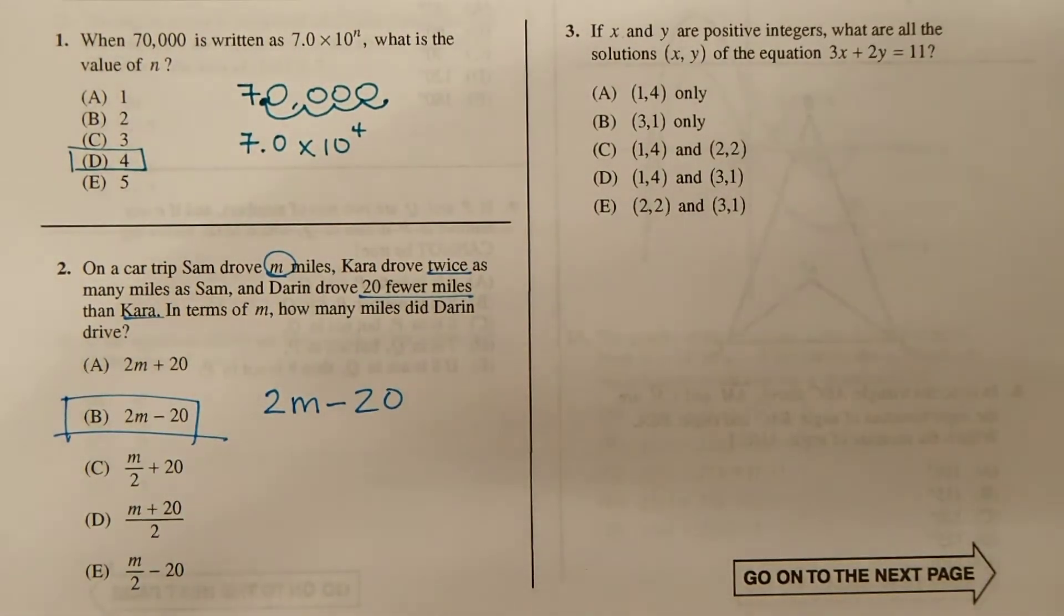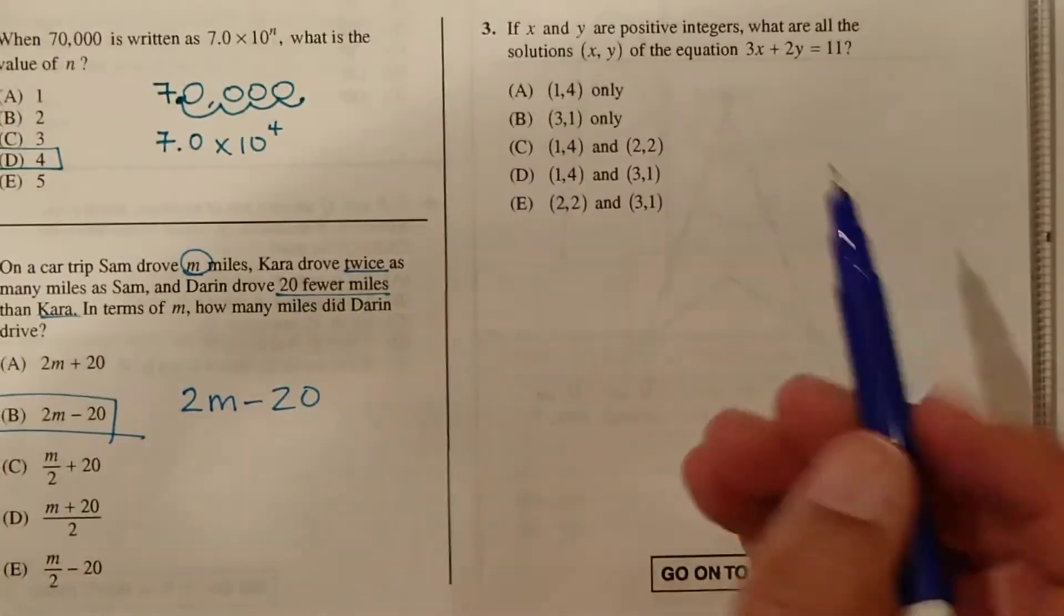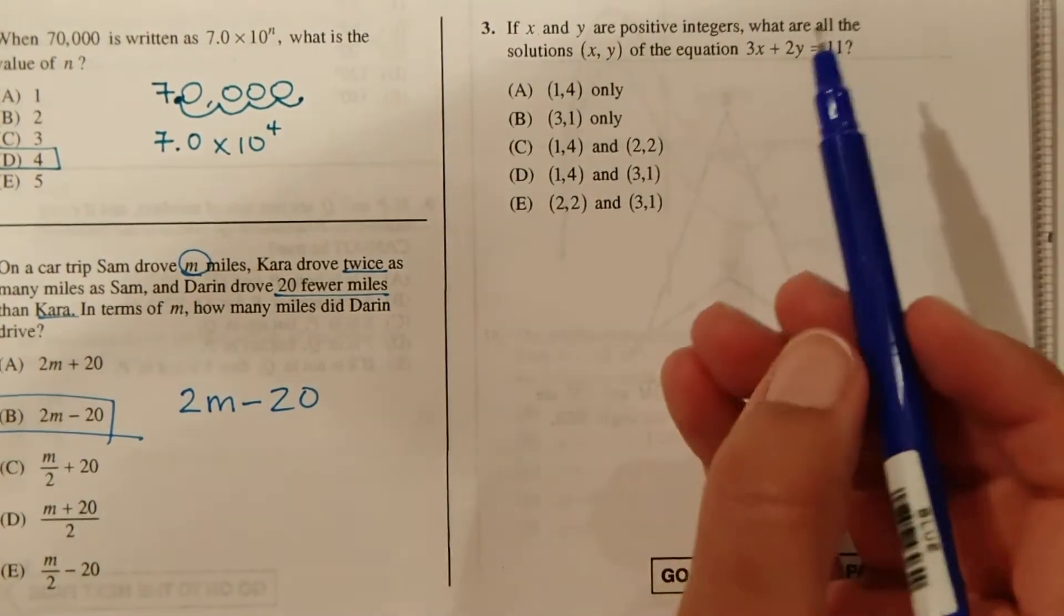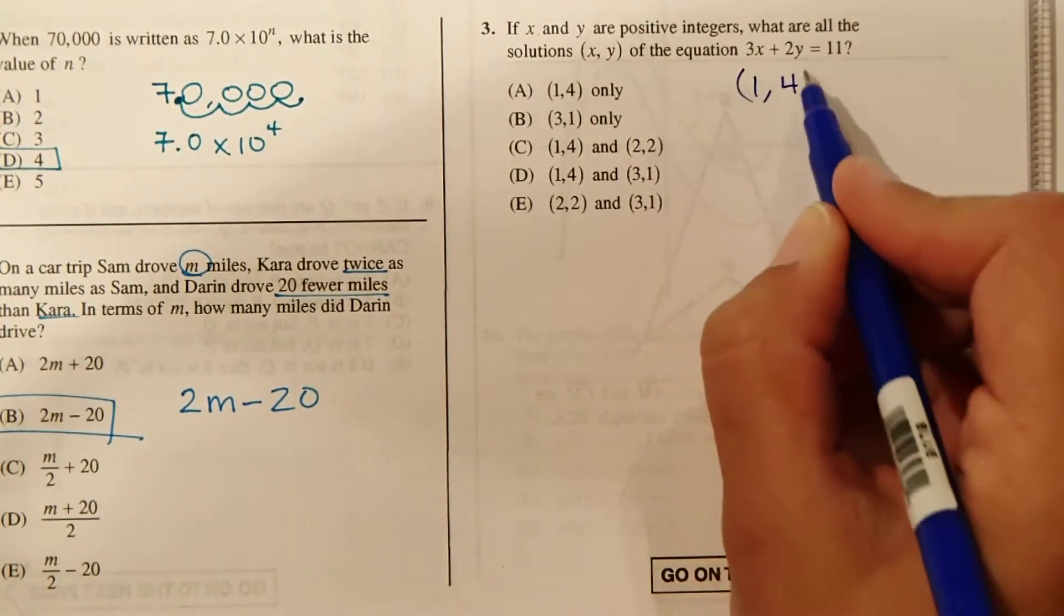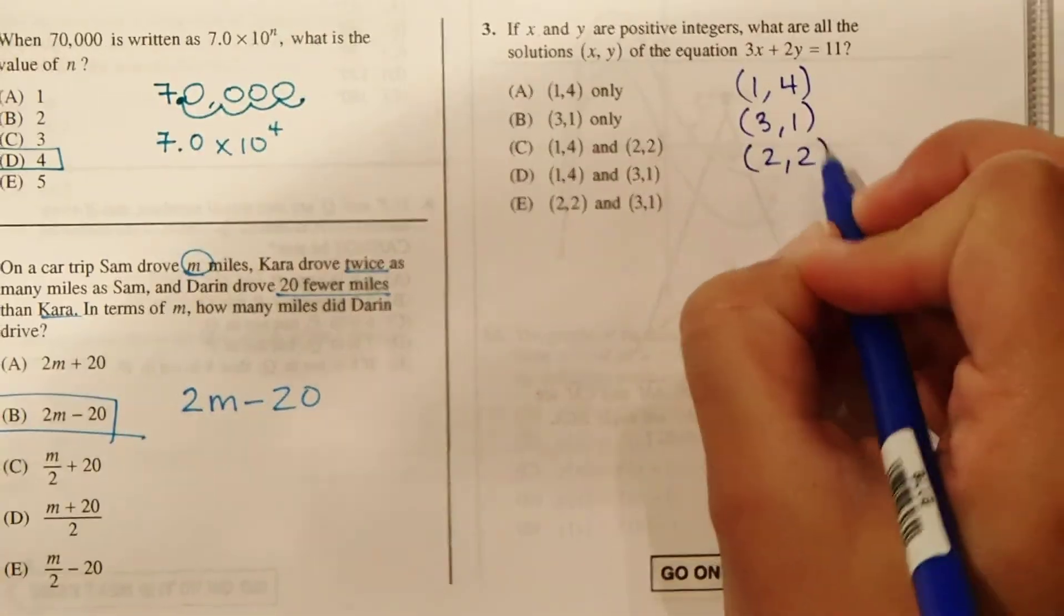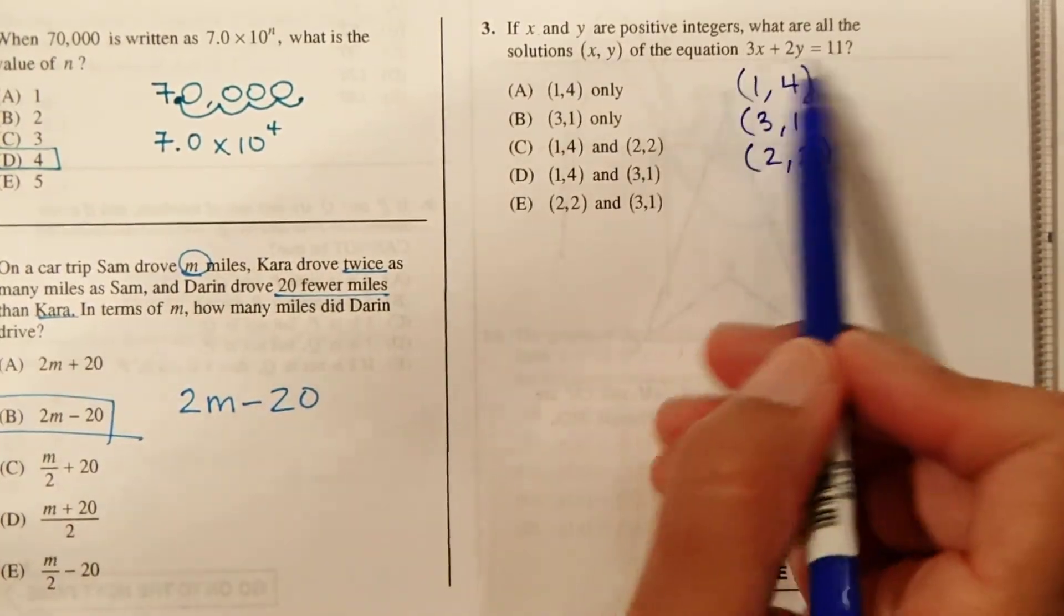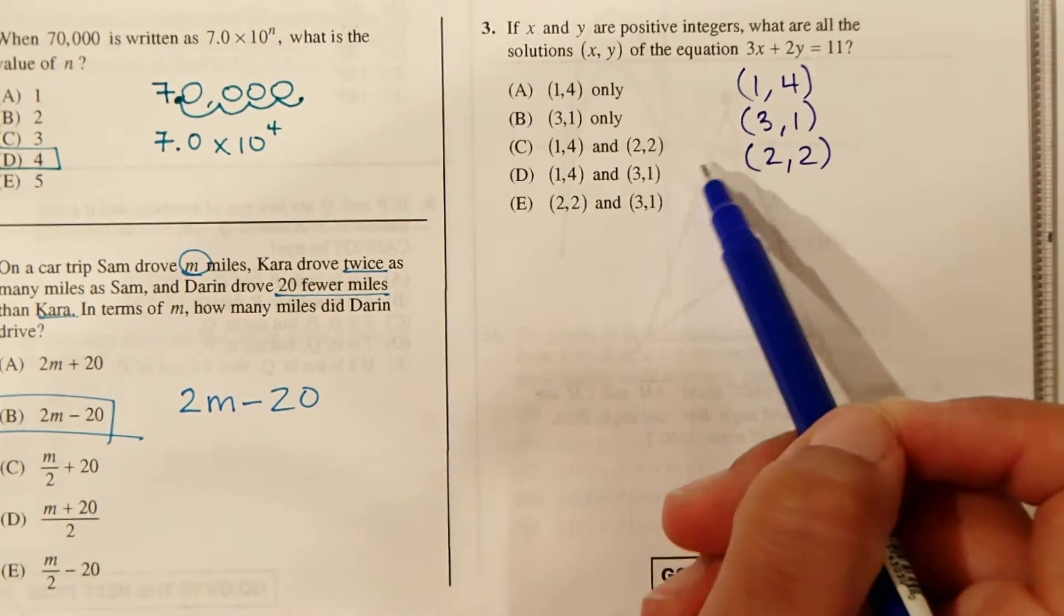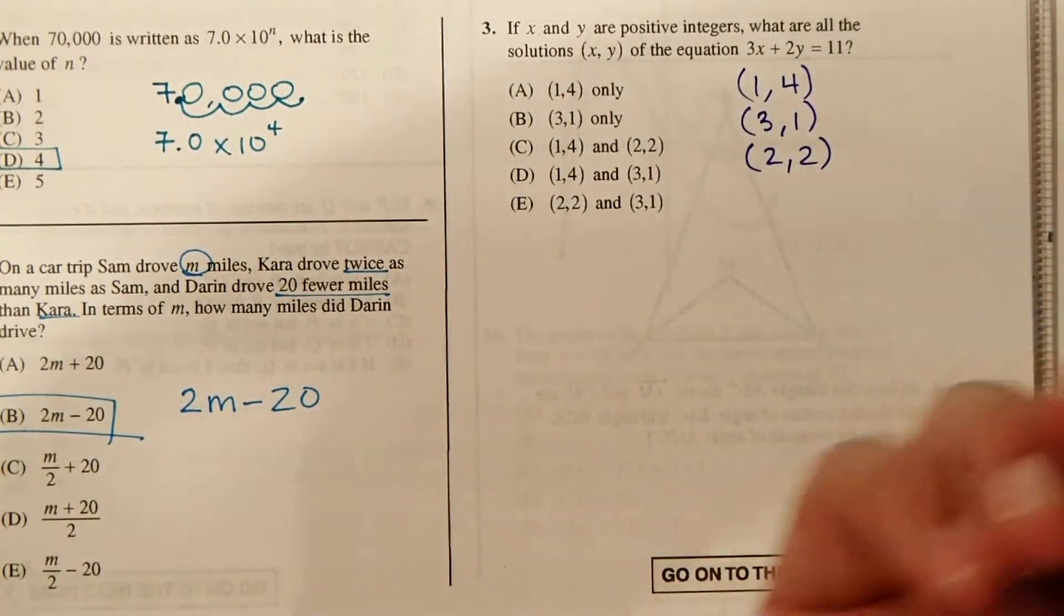Number 3. If x and y are positive integers, what are all of the solutions (x, y) of this equation: 3x plus 2y equals 11? So we can see here we've got a couple of options. We've got (1, 4), (3, 1), and (2, 2). If we look at our answer choices here, what we're going to do is just plug in these coordinates into this function and see which one or ones of them work.